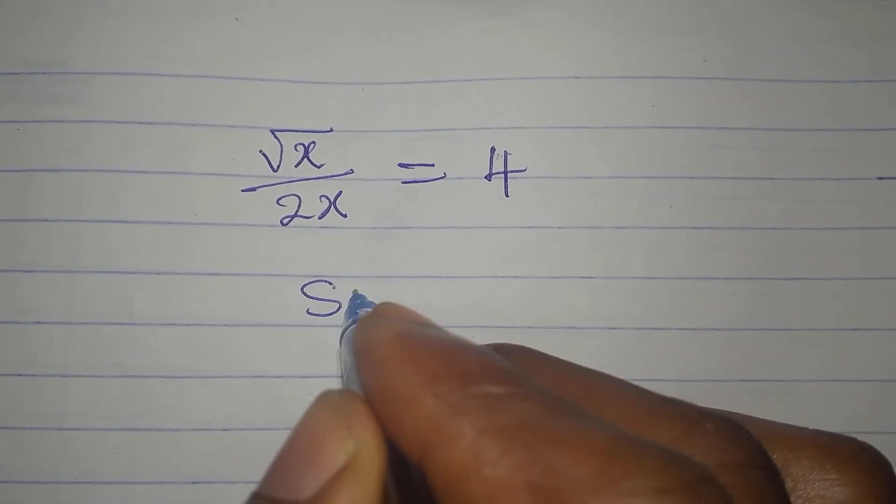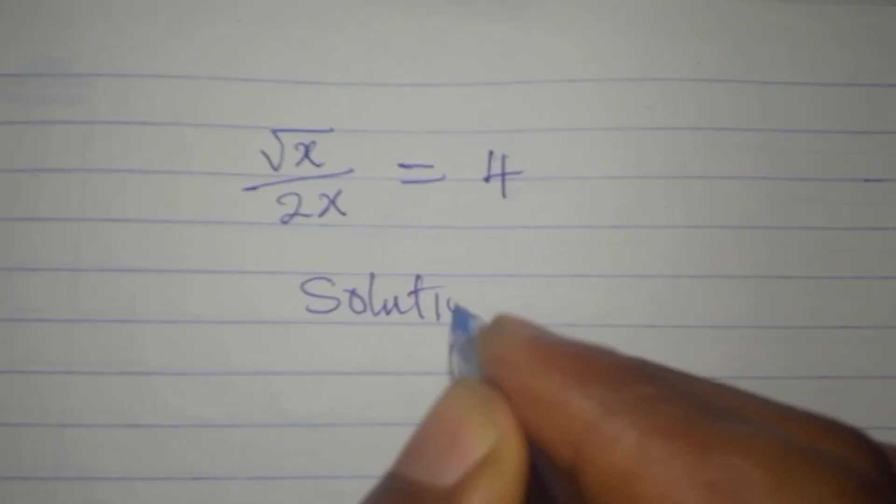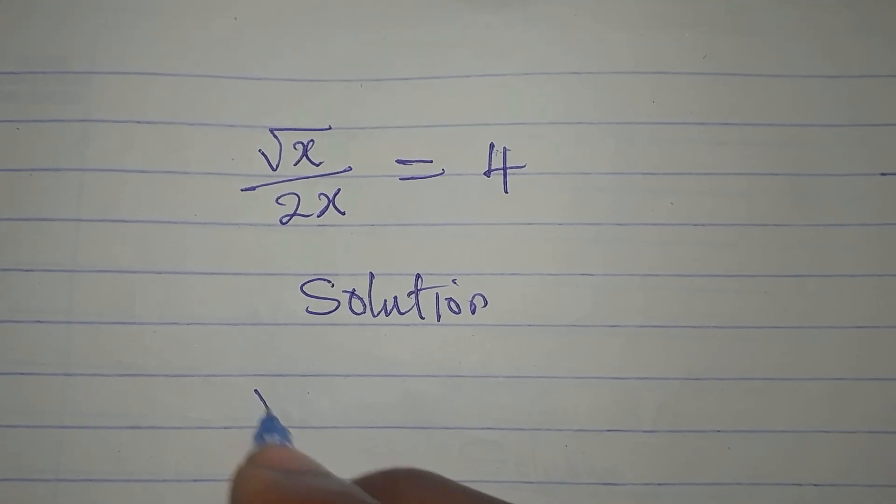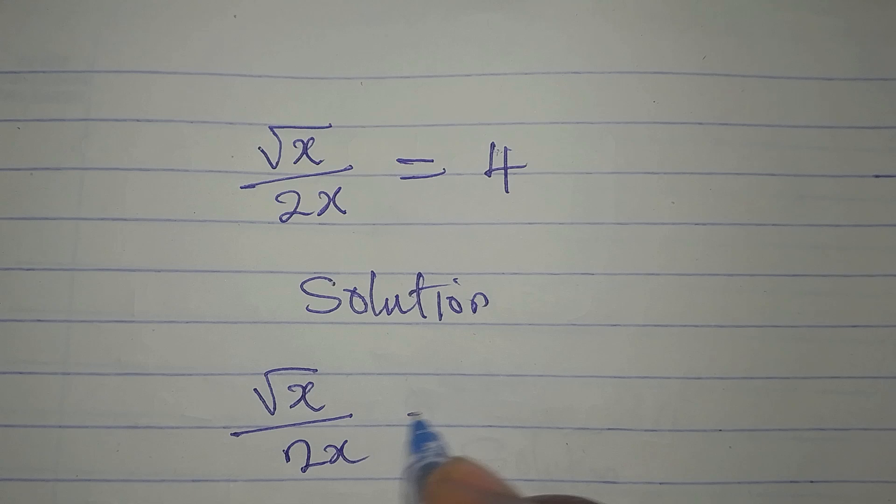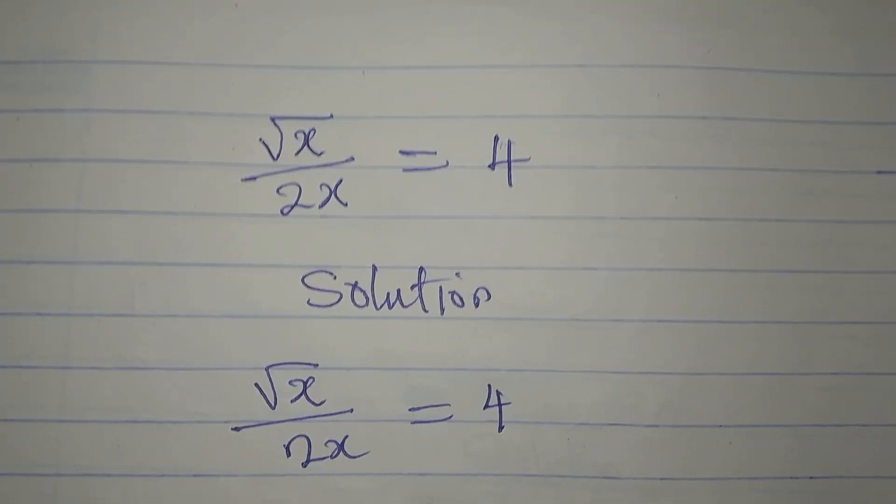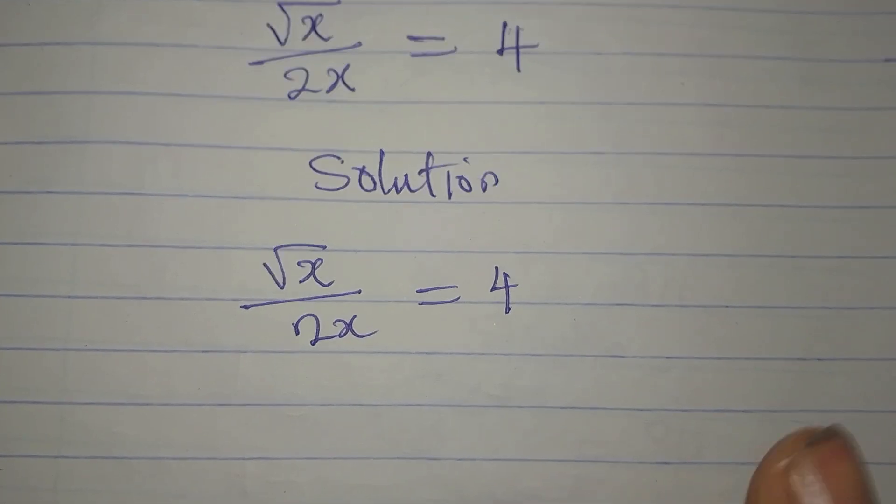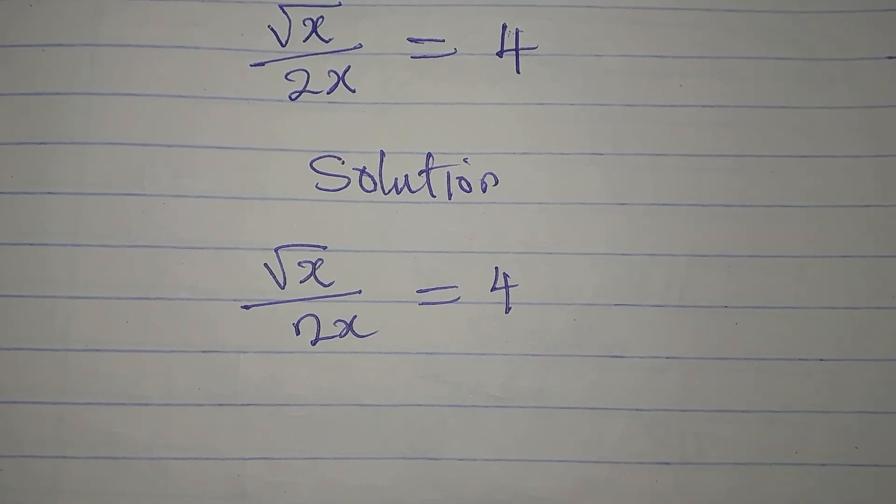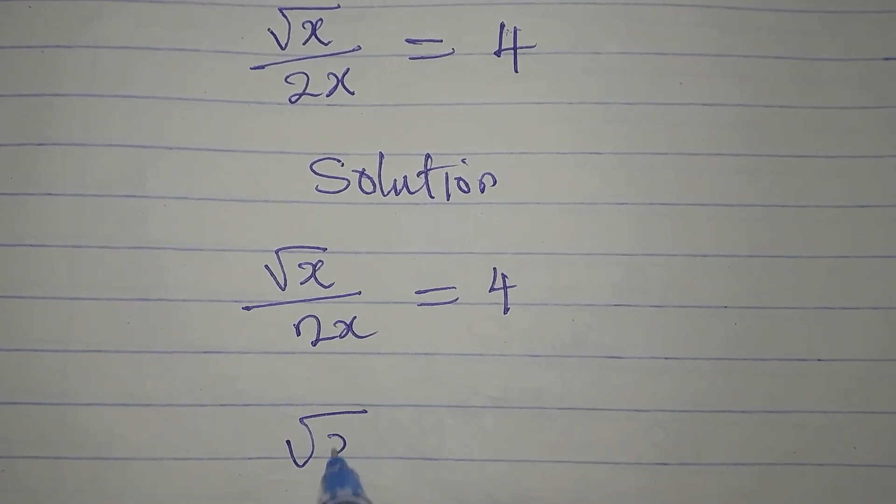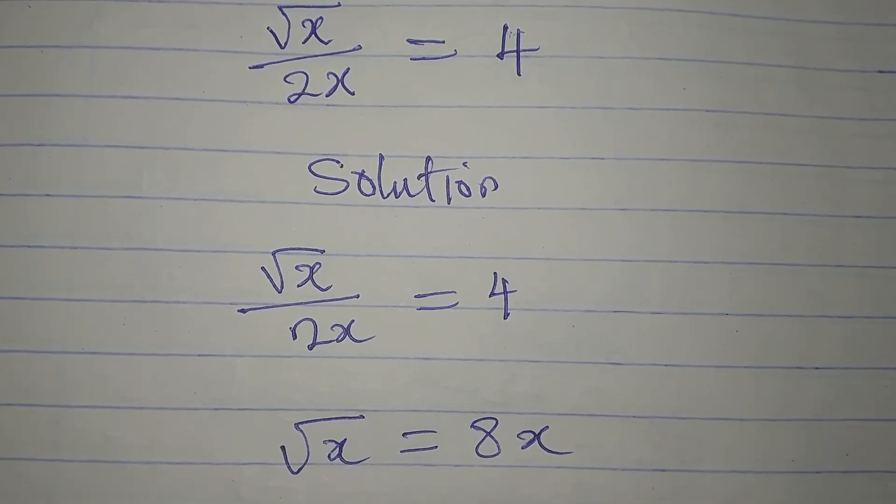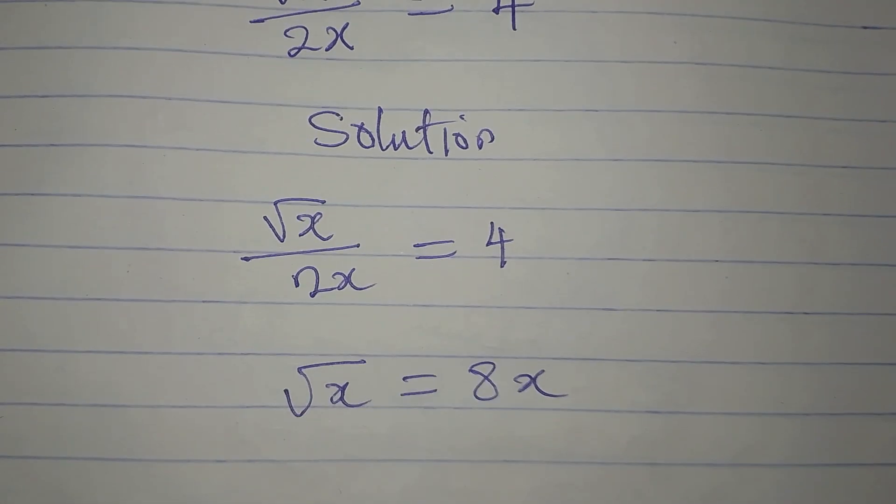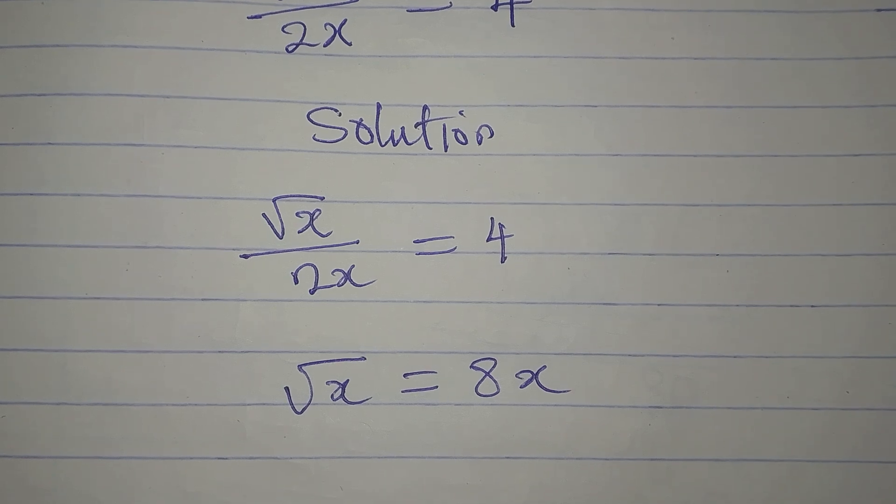Hi everyone, let's solve this. We have square root of x divided by 2x equals 4. We want to solve this, so let's cross multiply right away. We have square root of x equals 8x.